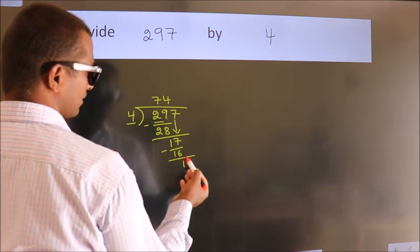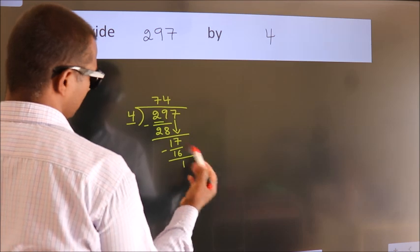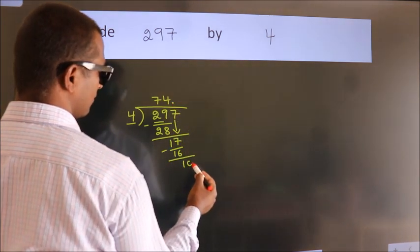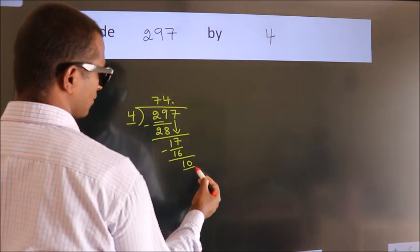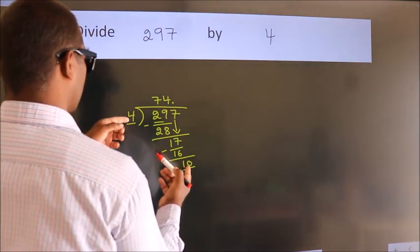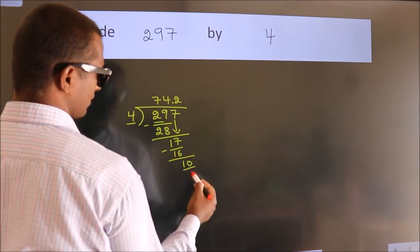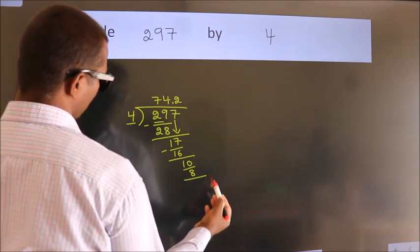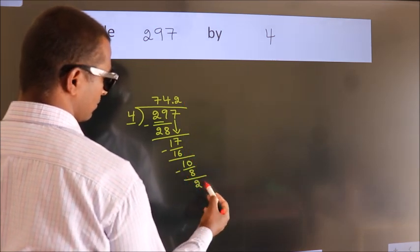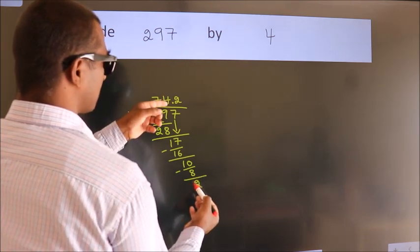After this, there are no more numbers to bring down. So what we do is put a dot and take 0, giving us 10. A number close to 10 in the 4 times table is 4 twos, 8. Now we subtract and we get 2. After this, we already have the decimal.